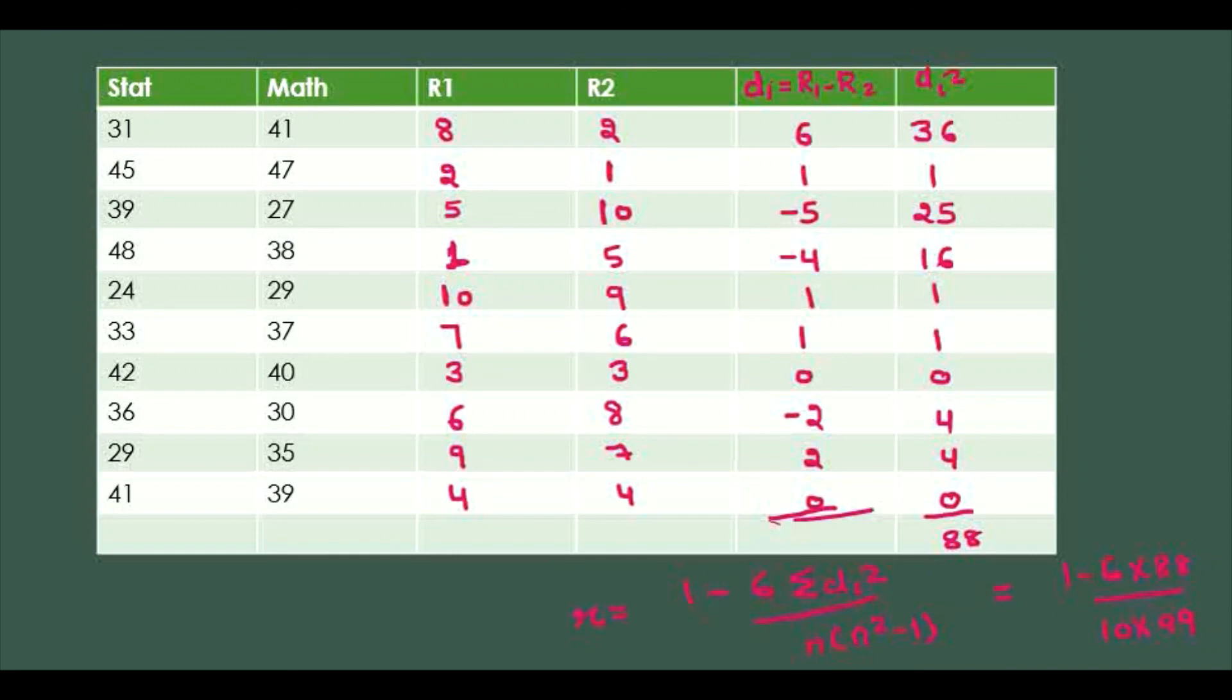So in this lecture we have seen when rank is not given but data is not repeated, how to assign rank and find the correlation coefficient. In the next lecture we will cover when there is repetition with rank given. Thank you students.